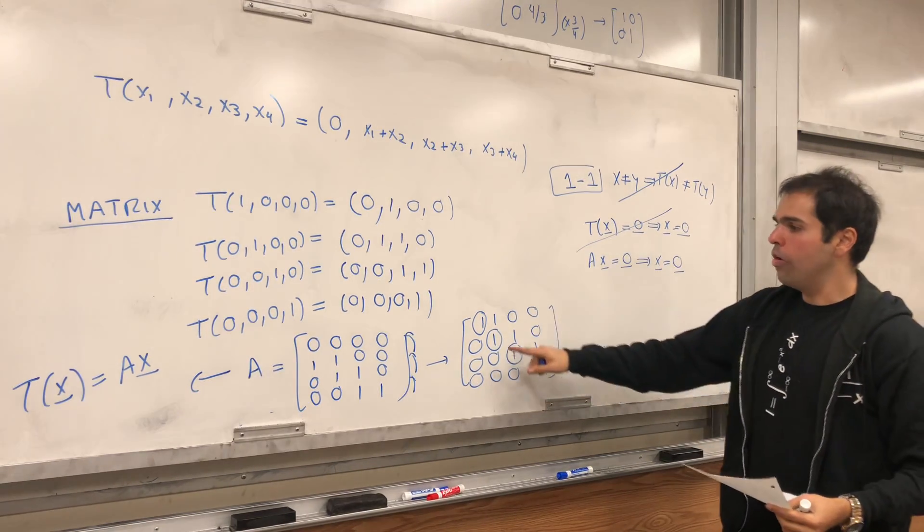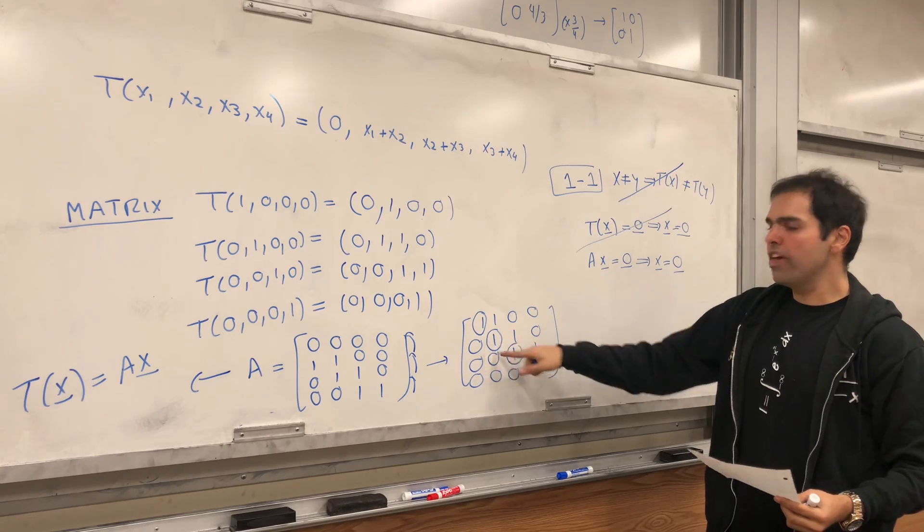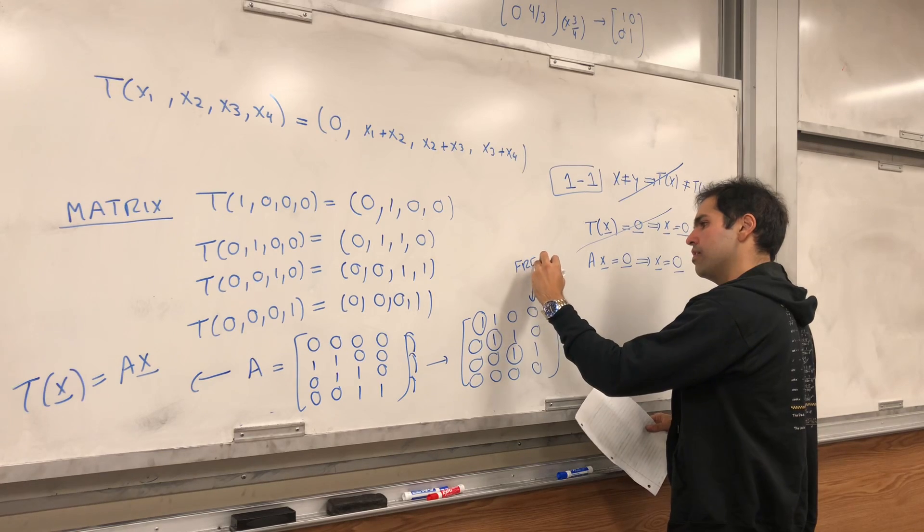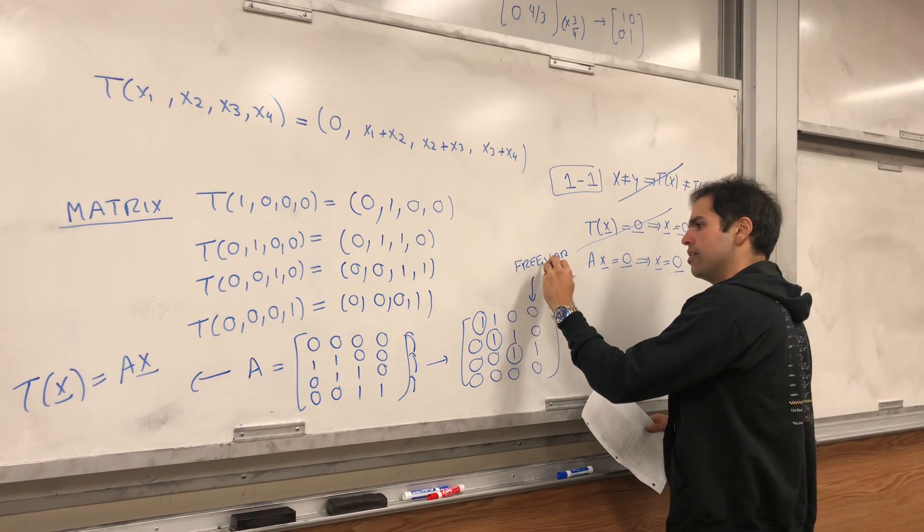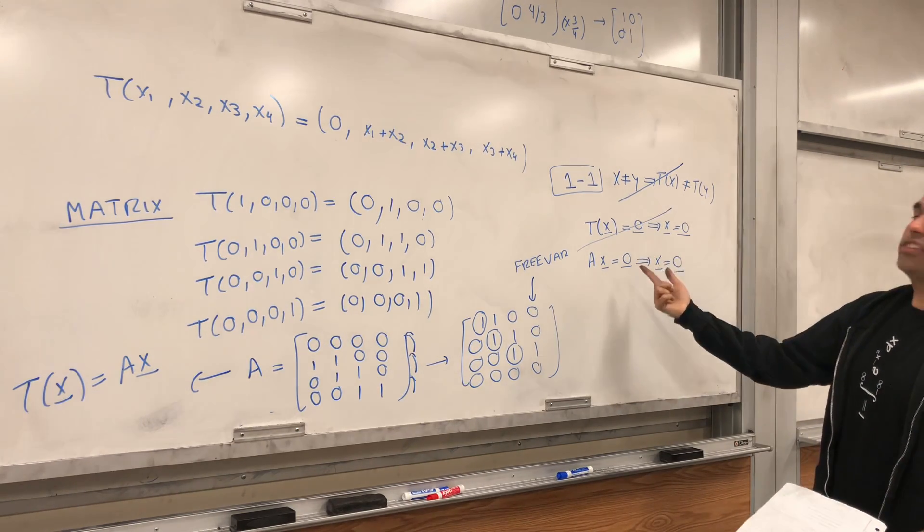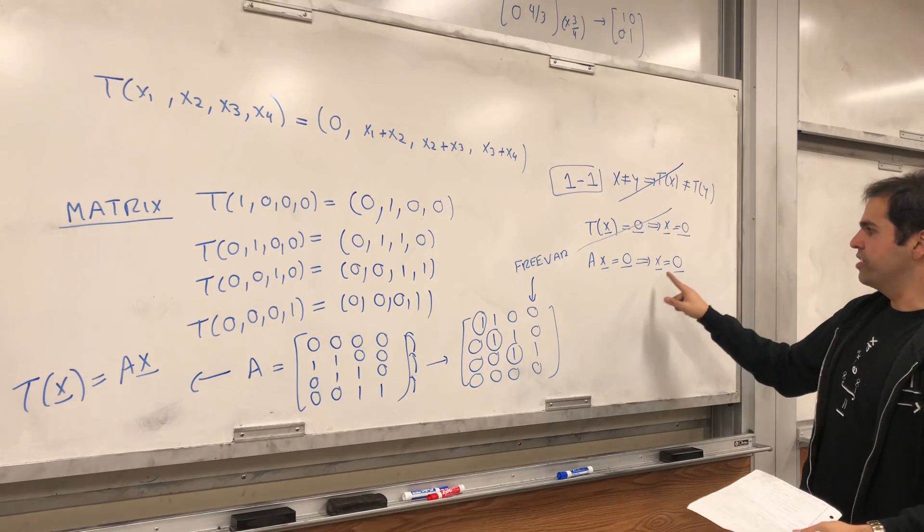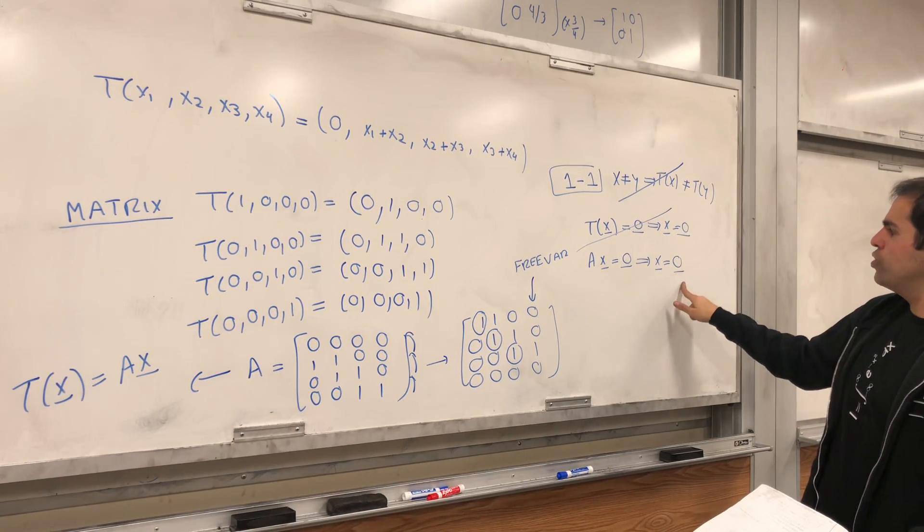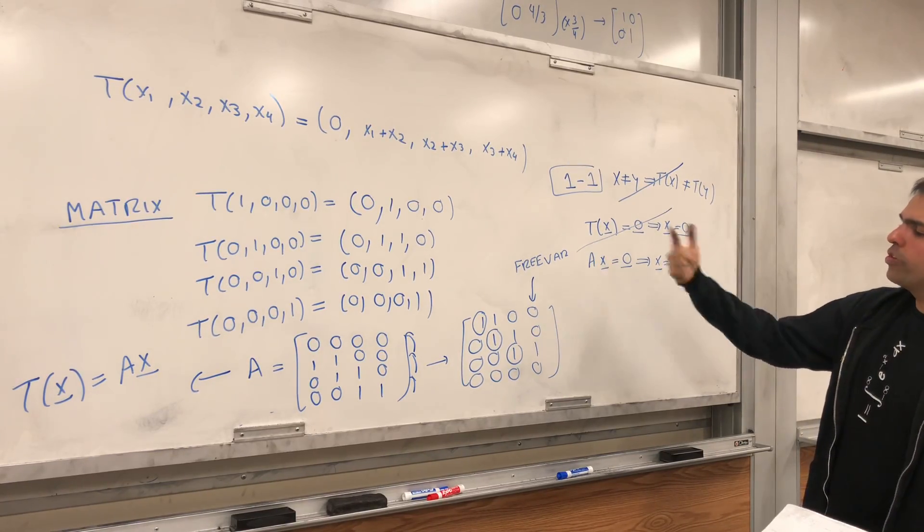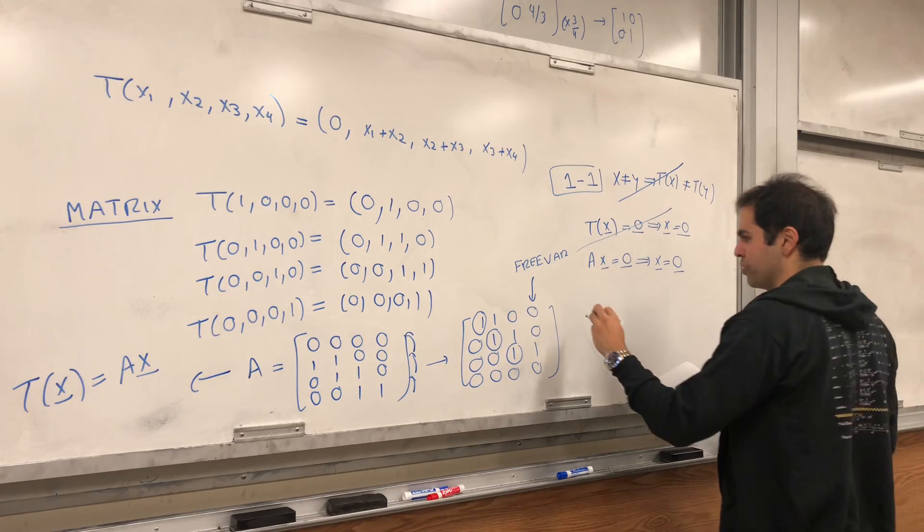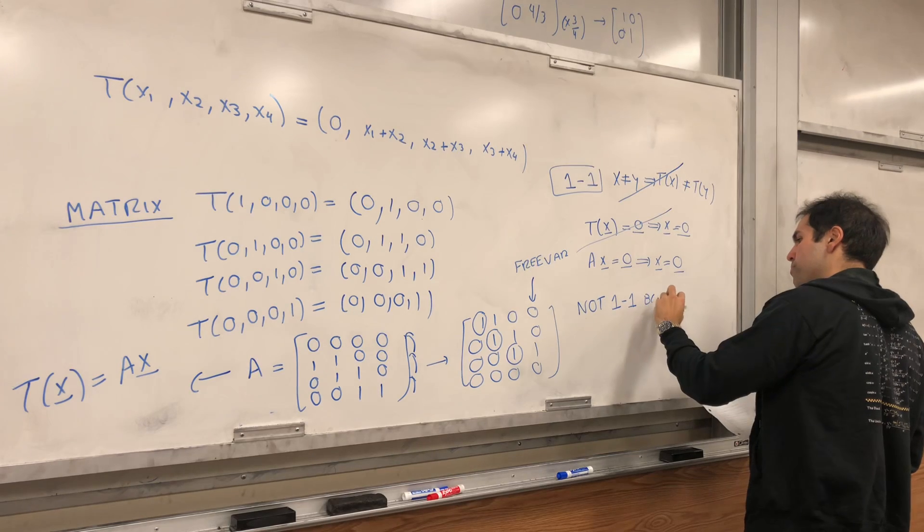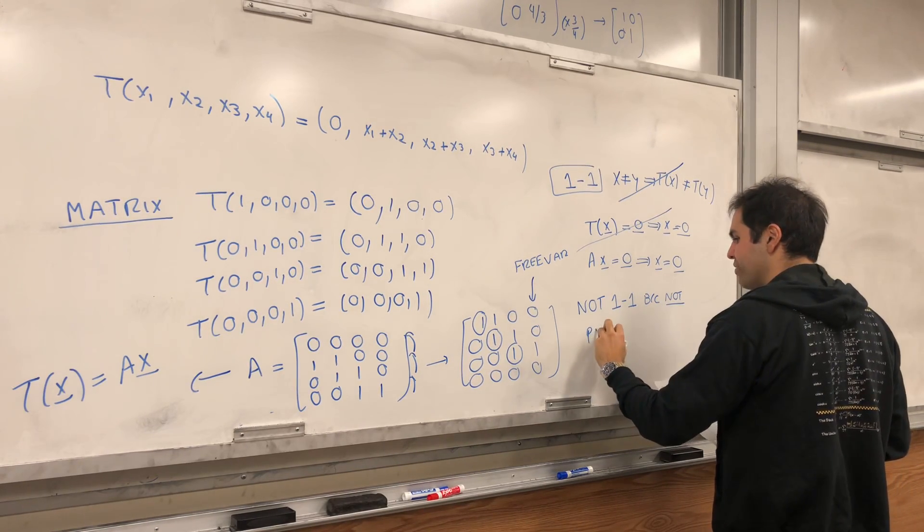And the question is, is this true here? Well, no, because notice there's not a pivot in every column. In particular, this is a free variable. Because there's a free variable, ax equals 0 must have infinitely many solutions. Because it has at least one solution, x equals 0. And so, because there's a free variable, there must be infinitely many solutions.